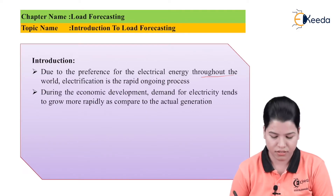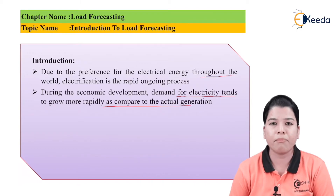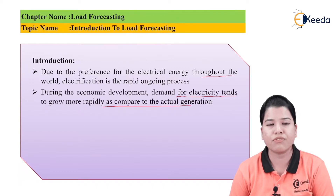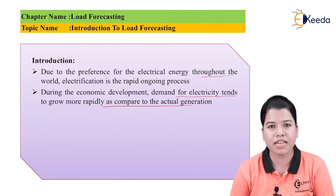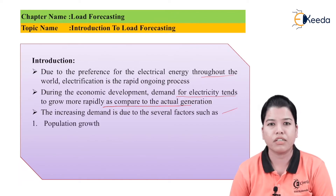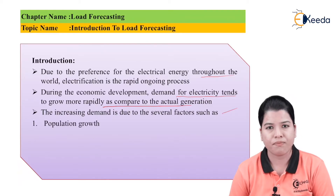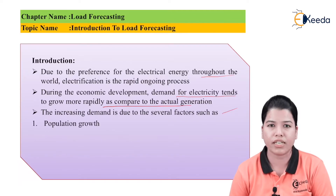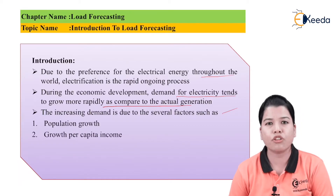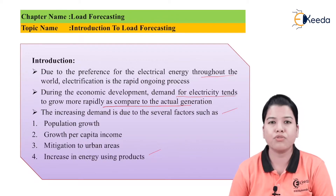During economic development, demand for electricity tends to grow more rapidly as compared to actual generation. If we compare generation with load, the increasing amount of load is very high compared to the increasing amount of generation, so generation at this time is not sufficient to provide total load requirements. The increasing demand on the power system is due to several factors: population growth, growth in per capita income, migration to urban areas, and increase in the use of energy products.